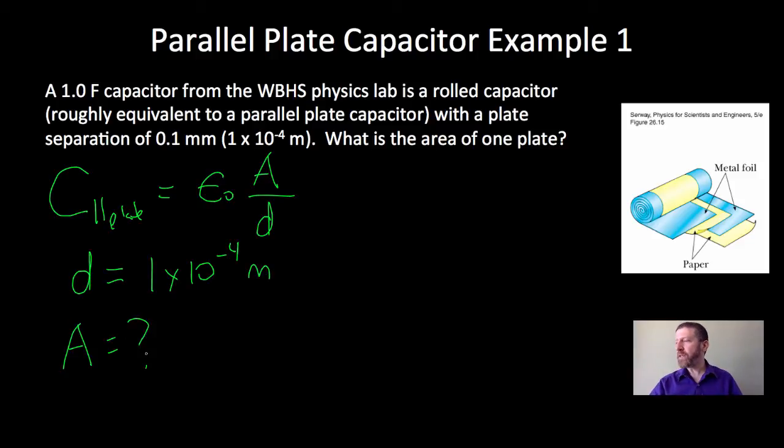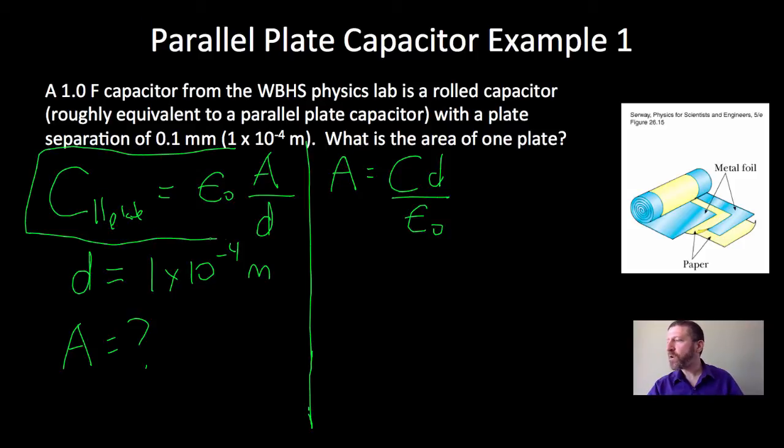Well, that should be easy enough. Let's go ahead and just solve for that. Well, A is equal to the capacitance times D over epsilon naught. I just simply solved this equation for A.